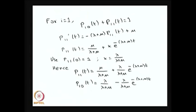Solving this differential equation with initial condition p_{11}(0) = 1, I get p_{11}(t) = mu/(lambda + mu) + K·e^{−(lambda+mu)t}. Using the initial condition, K = lambda/(lambda + mu). Therefore, p_{11}(t) = mu/(lambda+mu) + [lambda/(lambda+mu)]·e^{−(lambda+mu)t}, and p_{10}(t) = 1 − p_{11}(t) = lambda/(lambda+mu) − [lambda/(lambda+mu)]·e^{−(lambda+mu)t}. You can verify: adding both gives 1, and substituting t = 0 recovers the initial conditions.